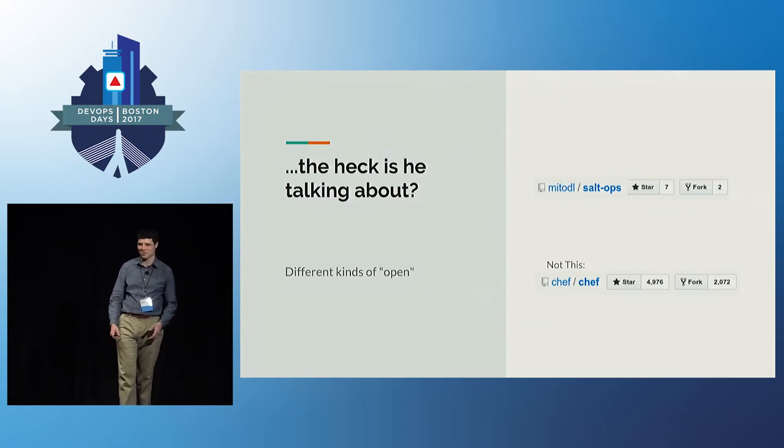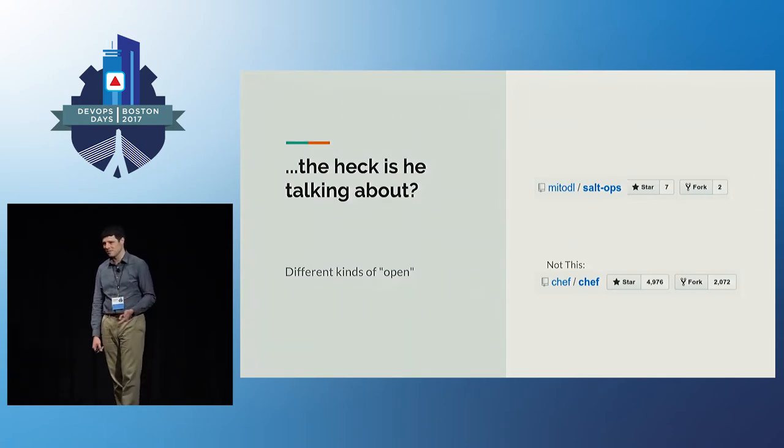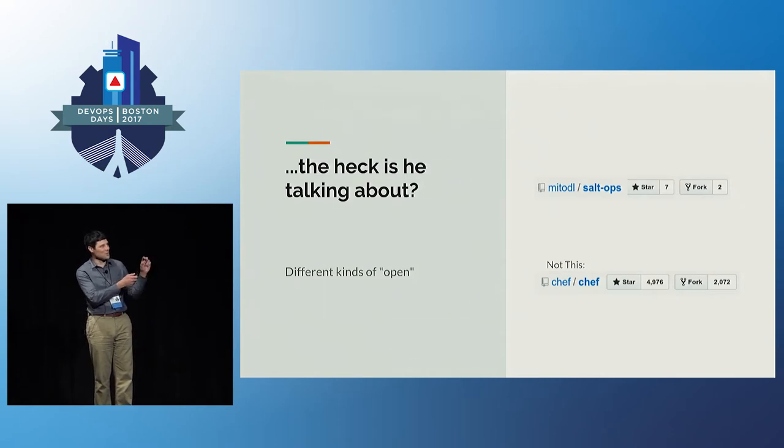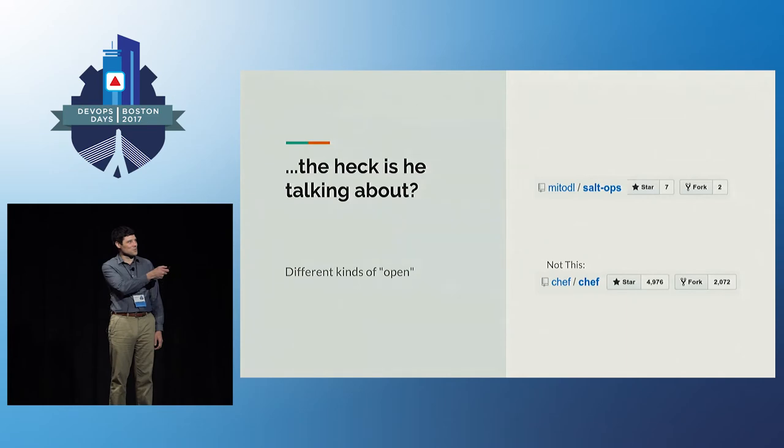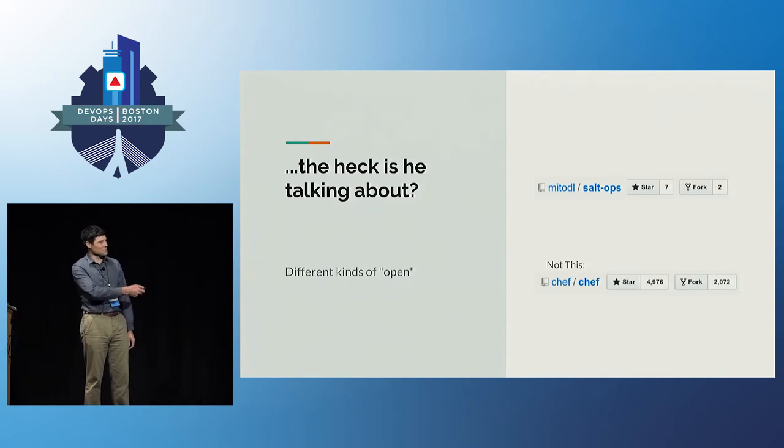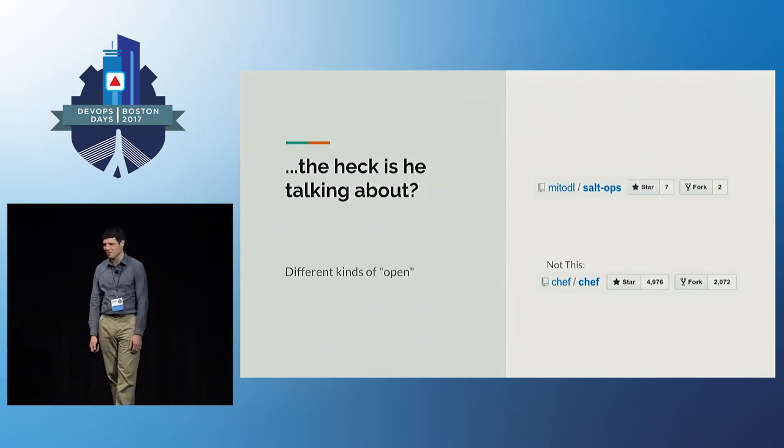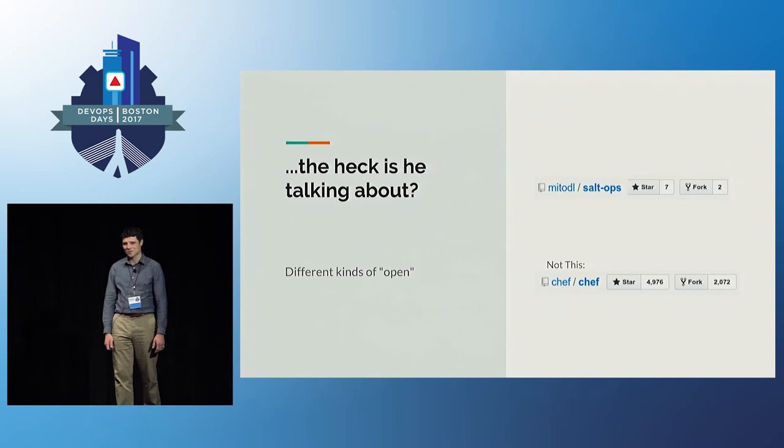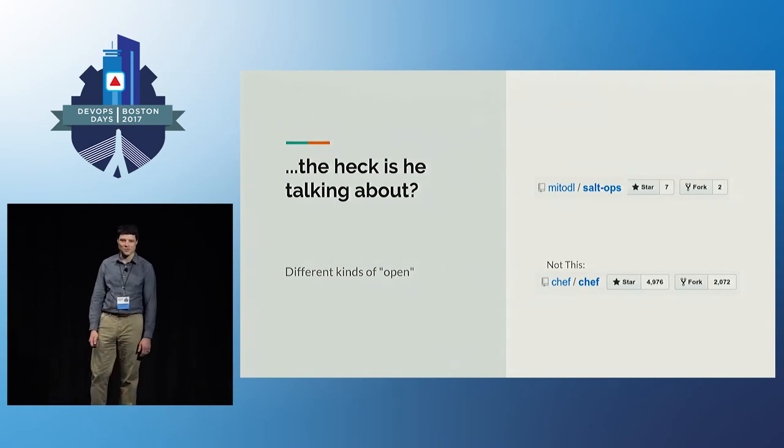And what I'm talking about is there are a few different ways to think about open source. So when everybody thinks about open source, you're probably thinking Linux, Ruby, Python, Consul. Well, I'm not talking about those. I'm talking about small open. So as you can see up there at the top, we've got the SaltOps repo, which is where a lot of the infrastructure code for my particular department goes. Right below that, you've got Chef. So you can see there's a huge disparity in the overall popularity, but I'd like to argue that they're both equally critical to our overall ethos of DevOps and infrastructure.